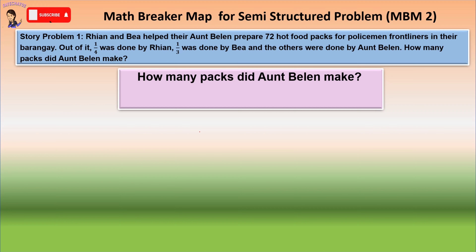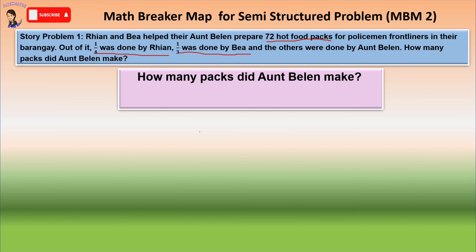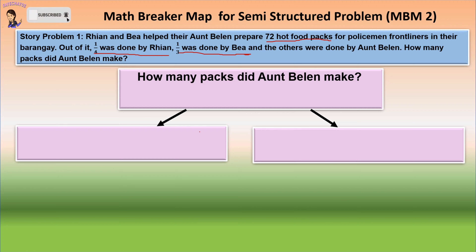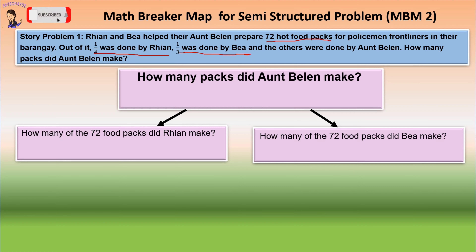We have 72 hot food packs. Then, one-fourth was done by Rian, and one-third was done by Bea. Since we already know the given packs, let us determine the two hidden questions. In this problem, we have two hidden questions. The first question is: how many of the 72 food packs did Rian make? And the other question is: how many of the 72 food packs did Bea make?